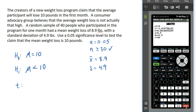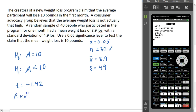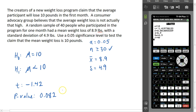We are given the t statistic, which is approximately negative 1.42, and a p-value of 0.082. Our next step is to compare the p-value to our level of significance. Our level of significance is 0.05, and our p-value is greater than 0.05, which means the appropriate conclusion is to not reject the null.